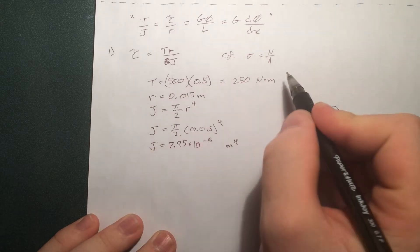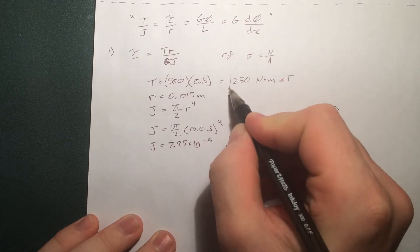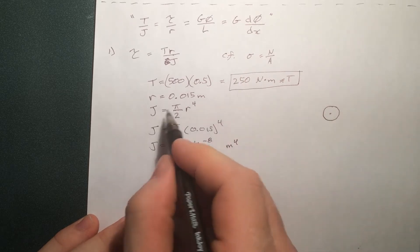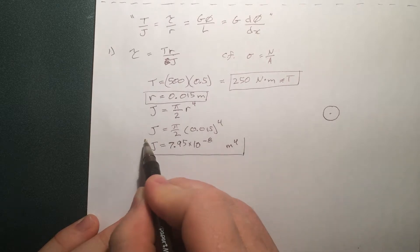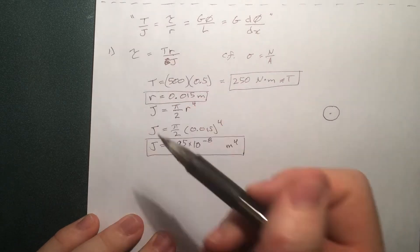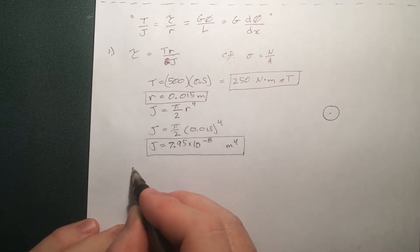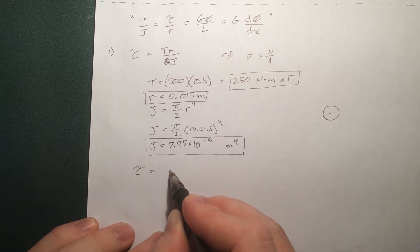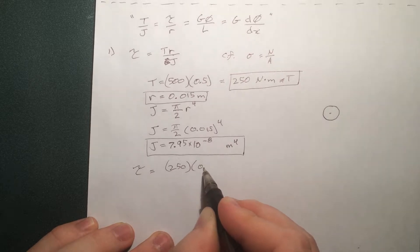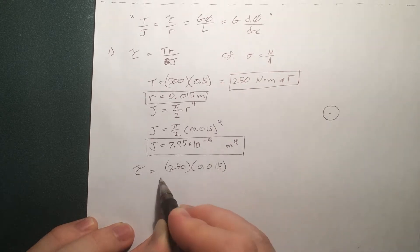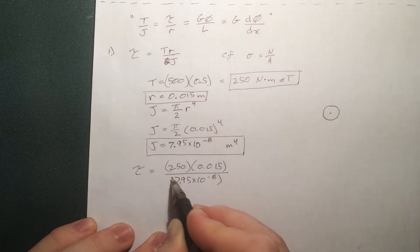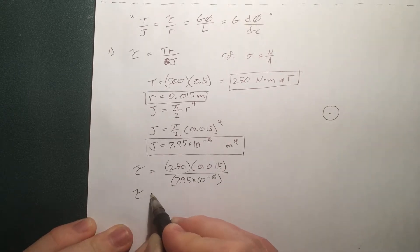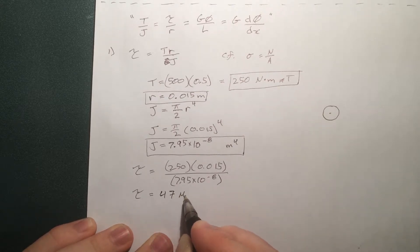Let's just make it very clear where we're going to find these. Now we have all the ingredients we need to solve this equation. Let's go ahead and plug these in. 250 times the radius over J. And it turns out to be 47 MPa.